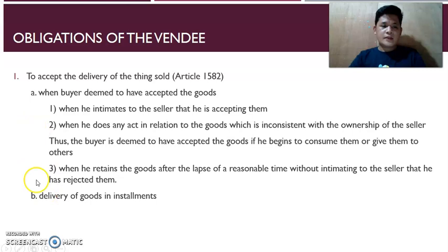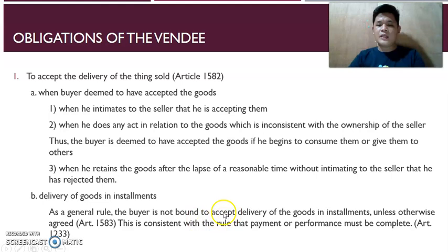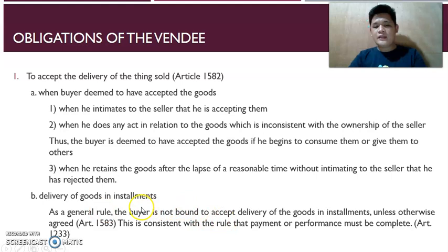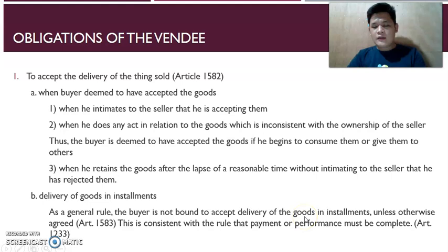Next, delivery of goods in installment. As a general rule under Article 1583, the buyer is not bound to accept delivery of the goods in installments unless otherwise agreed. This is consistent with the rule that payment or performance must be complete. For example, in real estate installment sales, if the seller delivers the title in installments, the buyer may refuse to accept — that is the general rule.